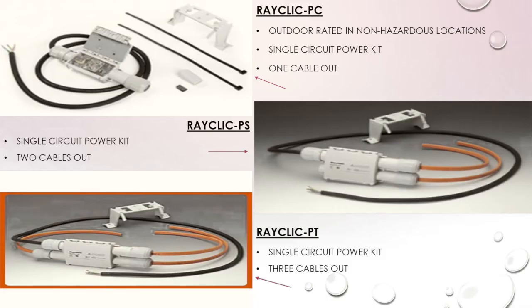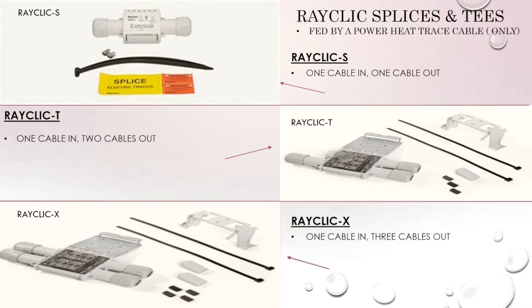Now switching to commercial components — our RayClick series. The RayClick series is rated for outdoor and indoor use in non-hazardous locations, and all power kits are single circuit. The RayClick PC is the most common: one circuit, one cable out. The RayClick PS has two cables out, and the PT has three cables out. For splices and Ts, the RayClick S is one cable in, one cable out, and the RayClick T is one cable in, two cables out.